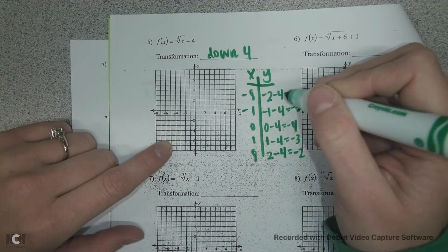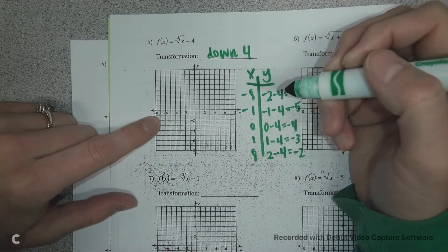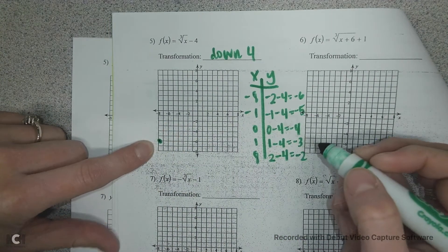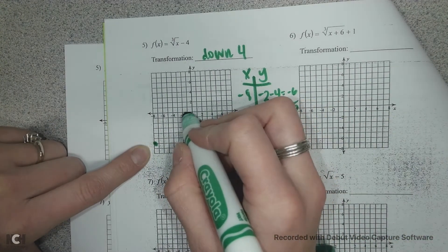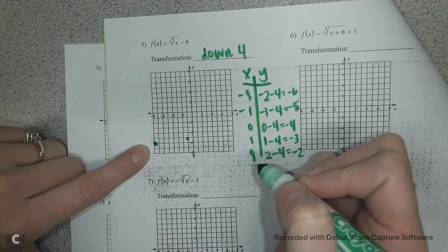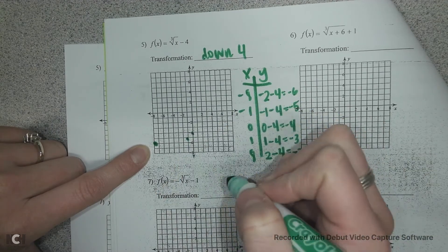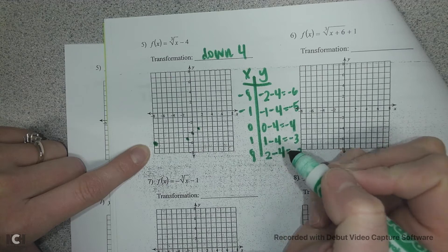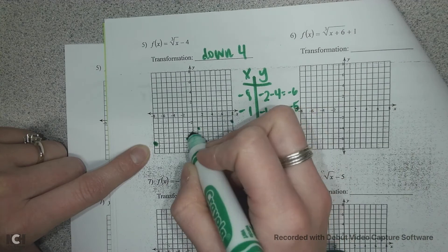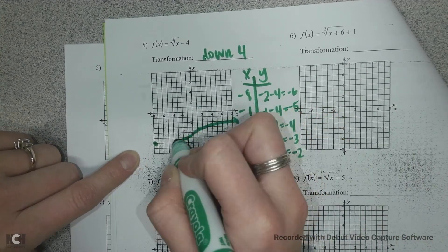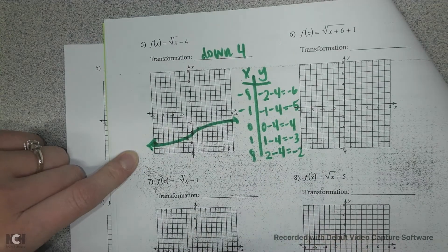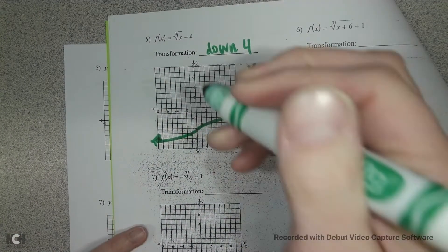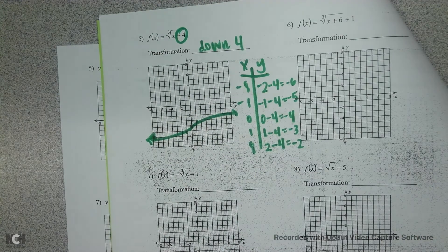Now we graph our ordered pairs. Our x values and y values are: (-8, -6), (-1, -5), (0, -4), (1, -3), and (8, -2). We can see our curve — we just shifted it down 4 spots because it's a minus 4 that is not included underneath the radical.